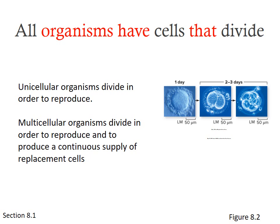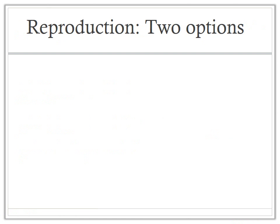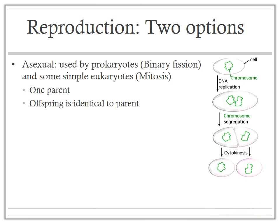When discussing cell division, we should talk about the details of reproduction. There are two types of reproducing — we touched on this in the first lecture through the characteristics of life. The first option is asexual reproduction. Prokaryotes — bacteria and archaea — reproduce asexually by binary fission.